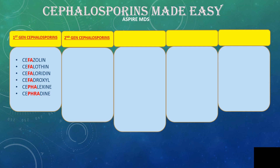Now let's talk about the second generation Cephalosporins. They have two exceptions as we discussed: Cefaclor and Cefuroxime. Other drugs that fall into the second generation Cephalosporins include Cefoxitin, Cefprozil, Cefaclor, and related compounds. These are the second generation Cephalosporins.